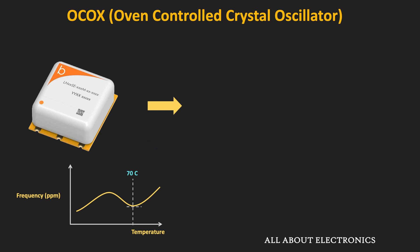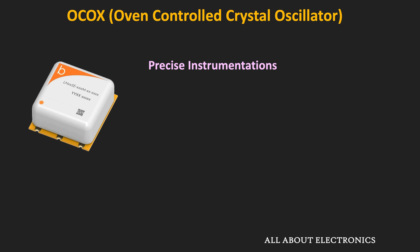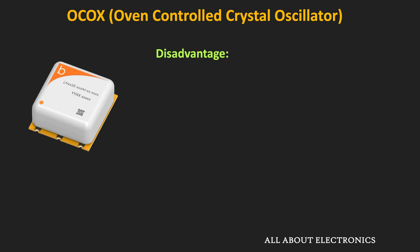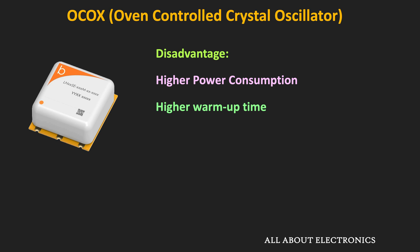Oven-controlled crystal oscillators are used in applications requiring very stable clock frequency: precise instrumentation, broadcasting, high-performance computing, and military applications. However, a major disadvantage is that they consume a lot of power, making them unsuitable for battery-operated systems. They also have a very high warm-up time — once turned on, the oven takes about 2 minutes to reach the set temperature before the desired frequency is available. Additionally, OCXOs are much costlier compared to other oscillators, so they are used only in specific applications.